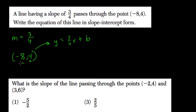4 is equal to y, and negative 8 is equal to x. So 4 equals 3 fourths times negative 8 plus b.